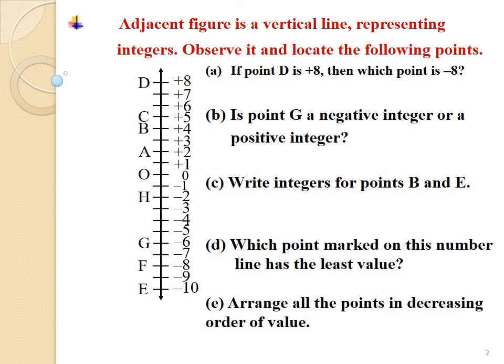Now let us read the questions carefully and write down the answers by observing the number line. Sub-question a: If point D is plus 8, then which point is minus 8? By observing the vertical number line, it is clear that F represents minus 8. Thus, the answer is F represents minus 8.